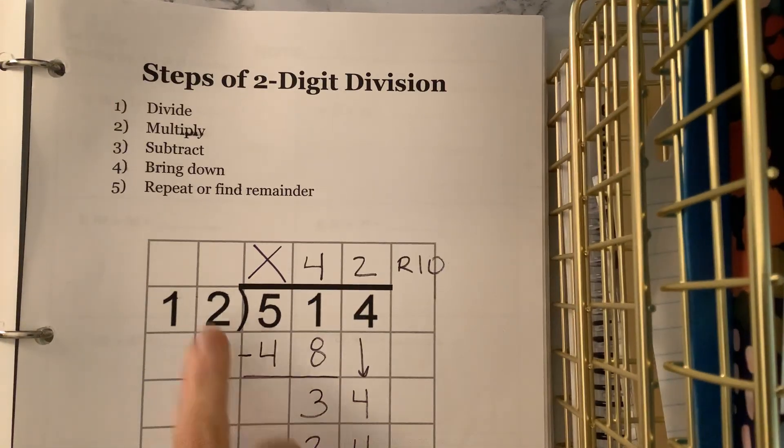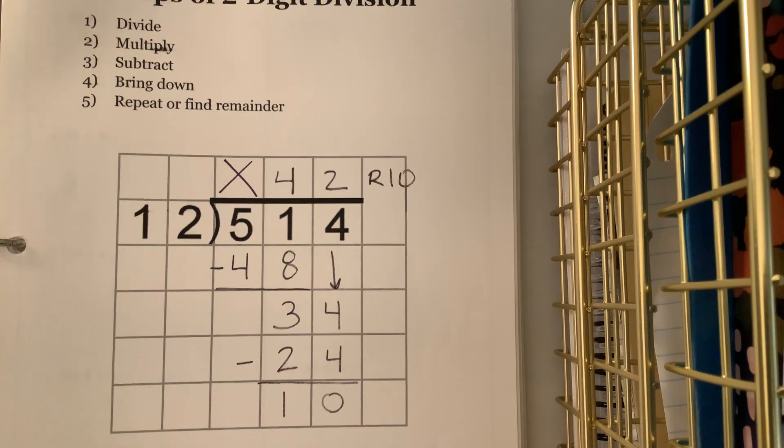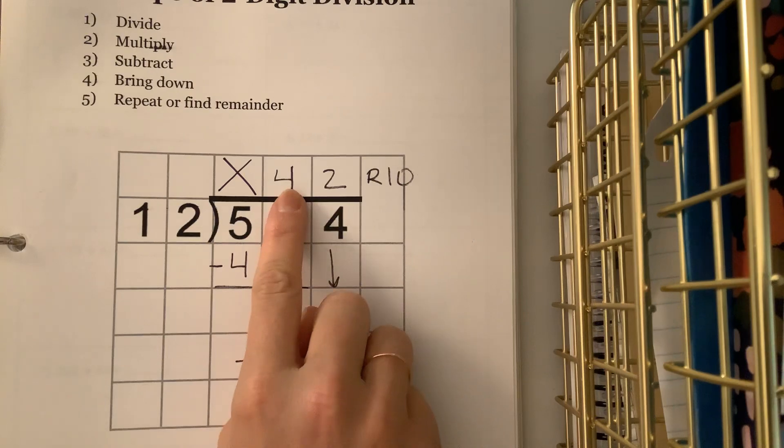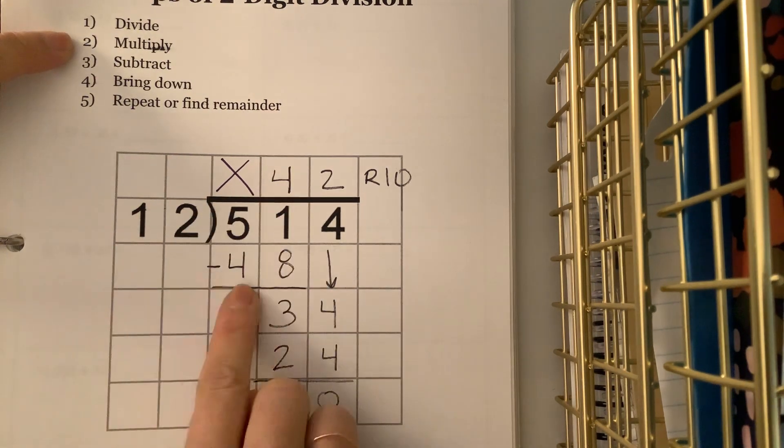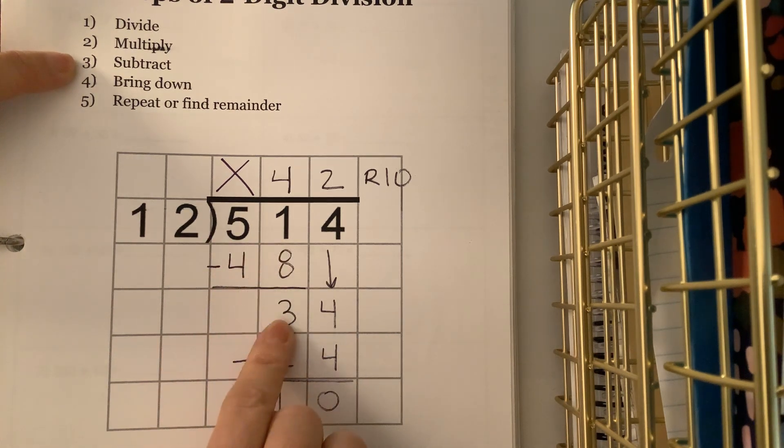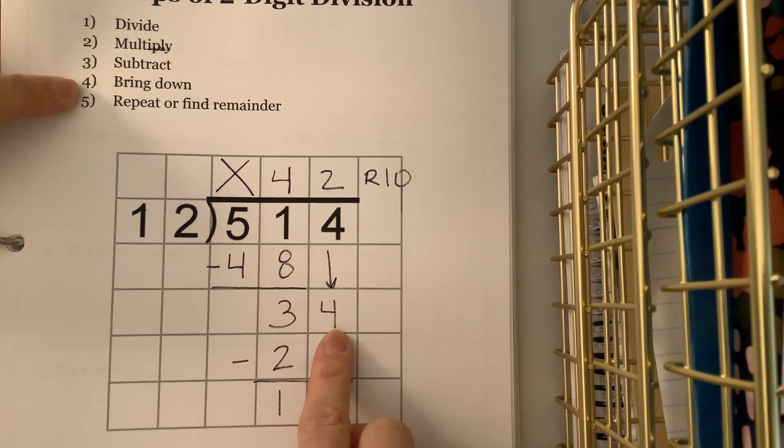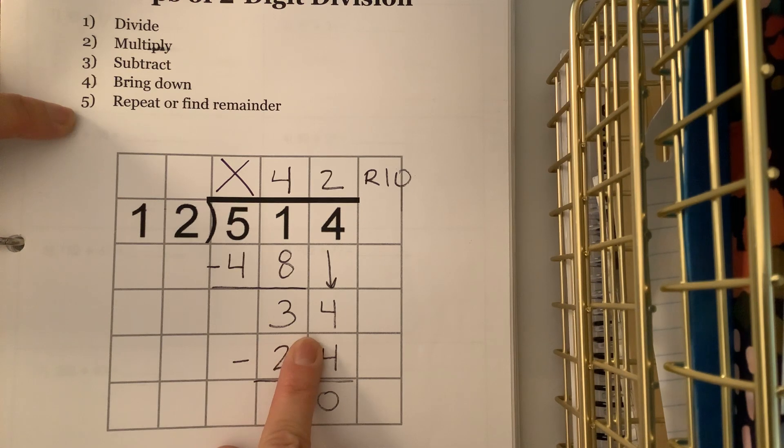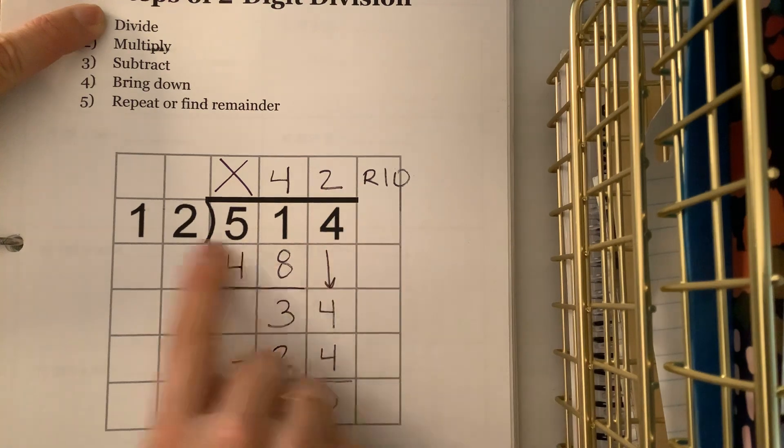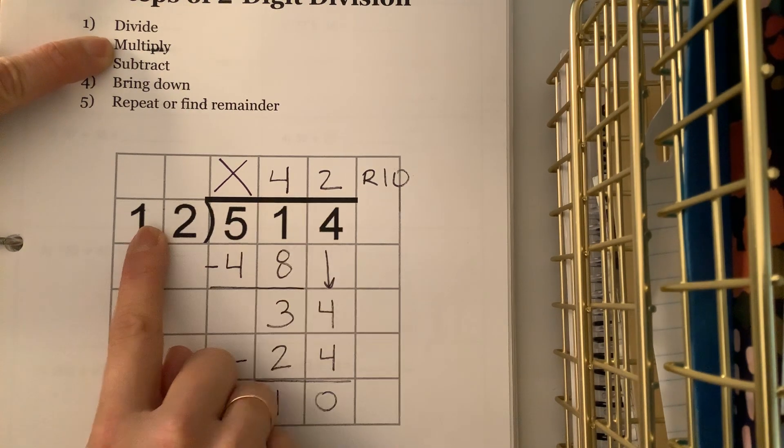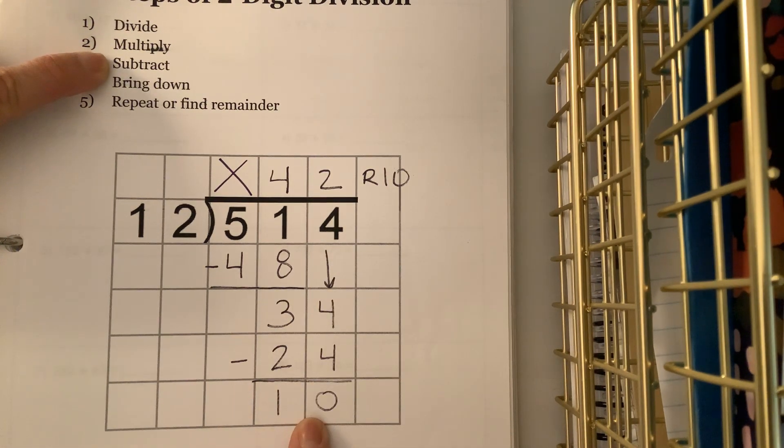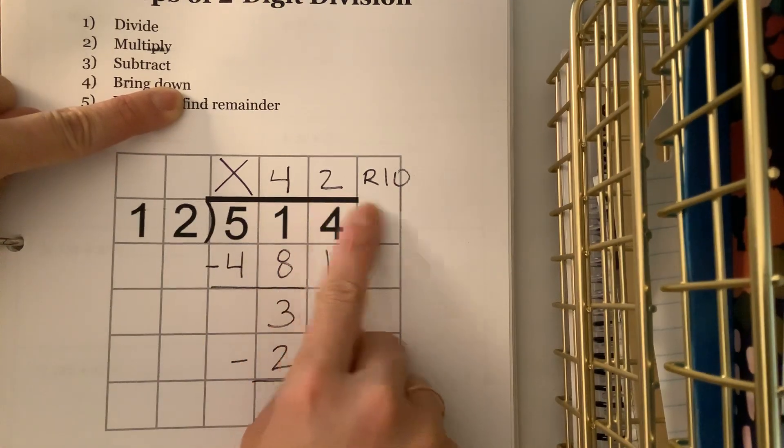Without further ado, remember, when we are dividing by a two-digit number, step one is to divide. So we said 12 does not go into five, but it goes into 51 four times. Step two is to multiply: four times 12 is 48. Step three is to subtract: 51 minus 48 is three. Step four, bring down, which we actually still haven't had to bring down yet, but we'll get there. Step five, in this case, we can repeat because we could bring down. So we go back to the start, we divide. 12 goes into 34 twice. We multiply: 2 times 12 is 24. We subtract: 34 minus 24 is 10. Bring down. There's nothing to bring down, which means there's nothing to repeat. So we find our remainder, which is 10. So 42, remainder 10.